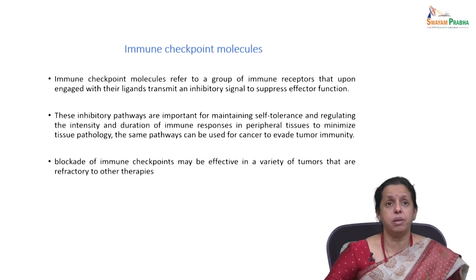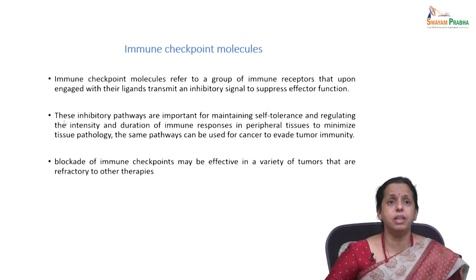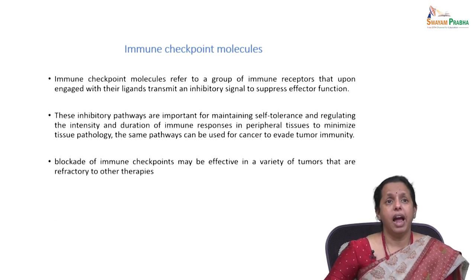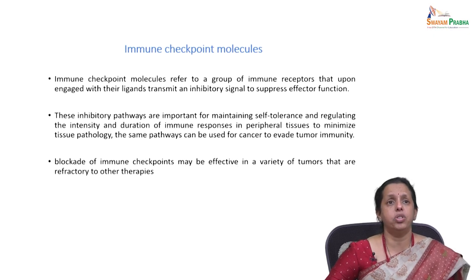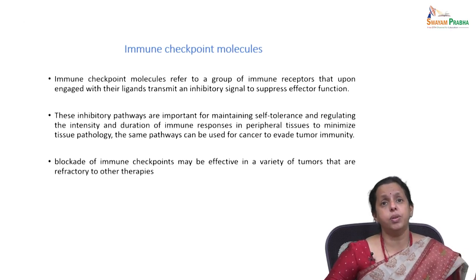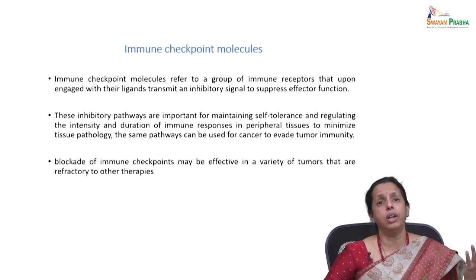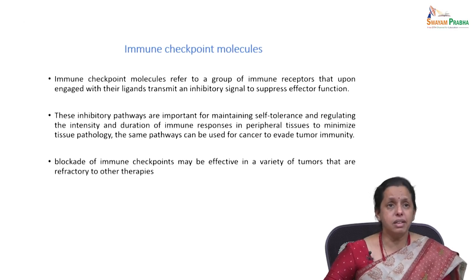These checkpoint molecules are important in normal function. These inhibitory pathways are crucial for maintaining self-tolerance and regulating the intensity and duration of immune response in peripheral tissues to minimize tissue pathology. The same pathways can be exploited by tumors to evade immunity — and remarkably, these same pathways are being used for cancer immunotherapy.